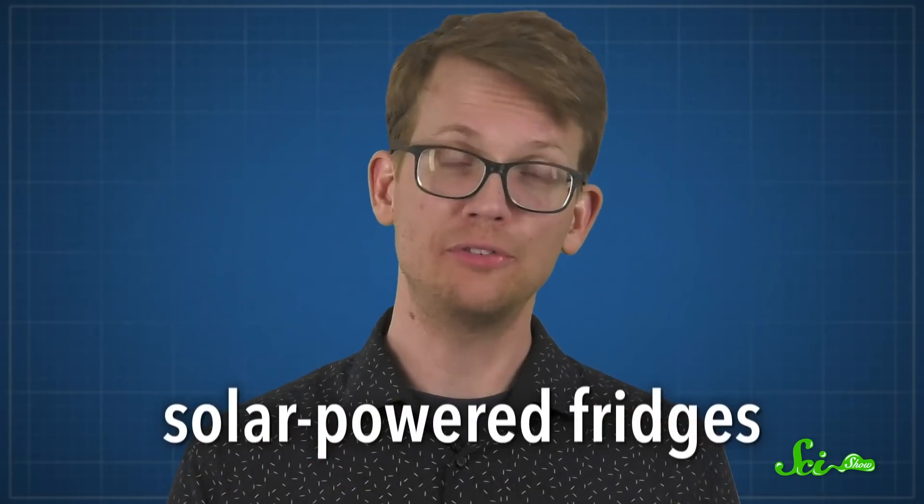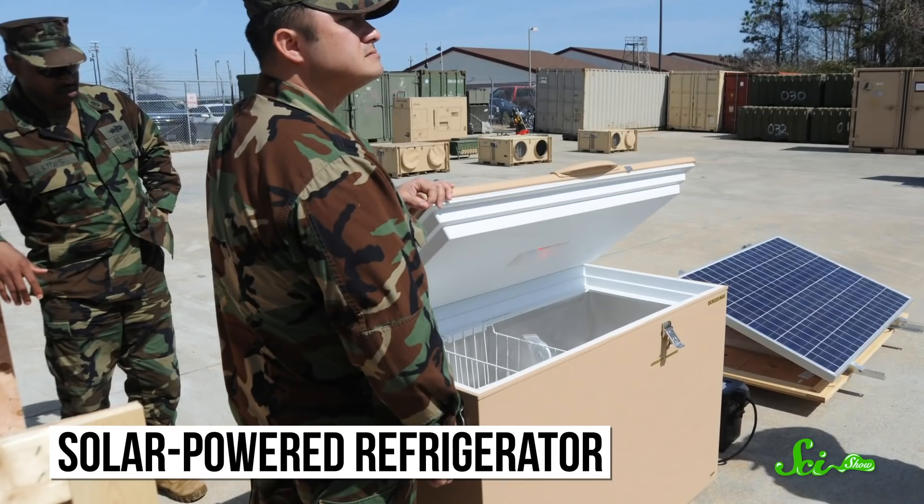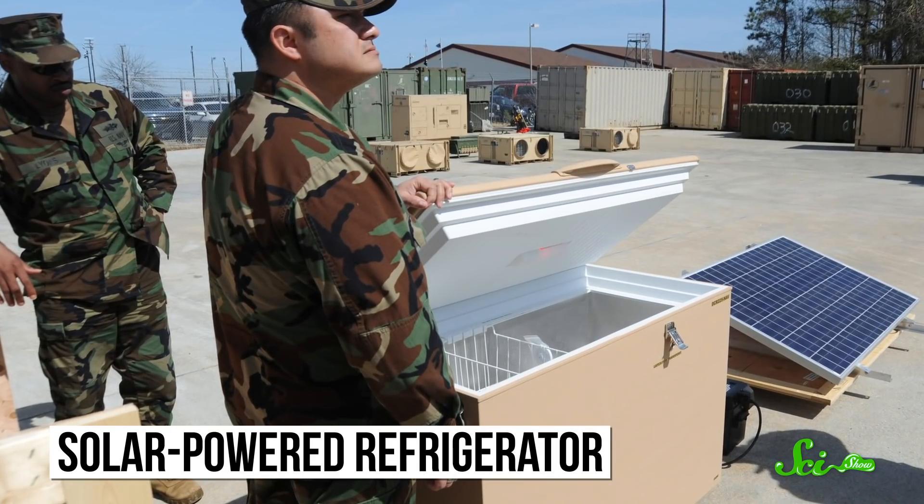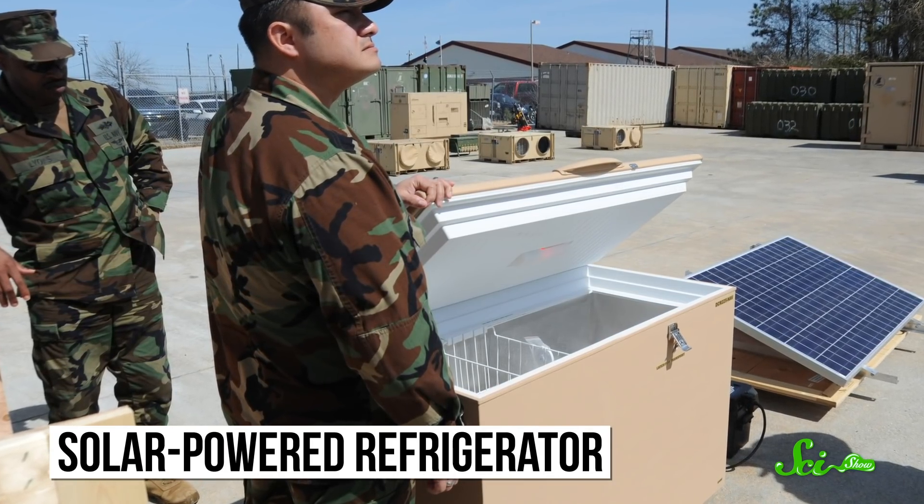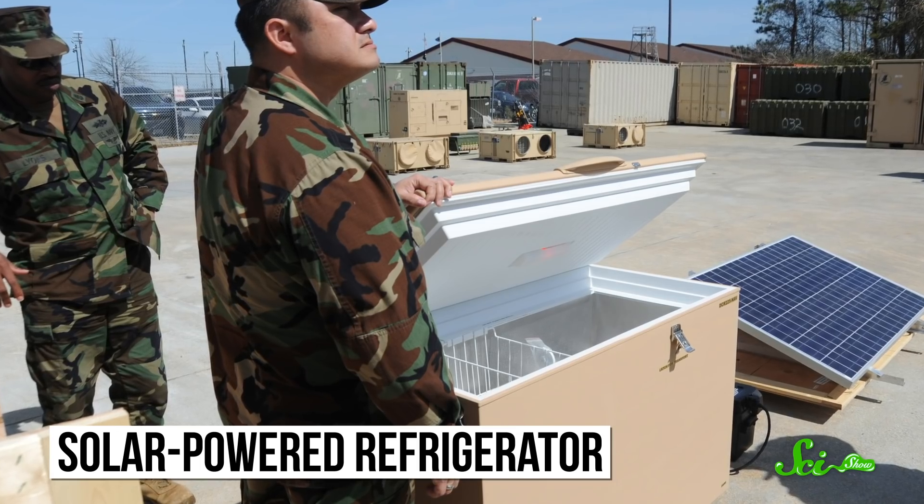Like, for example, solar-powered fridges. These are refrigerators powered by solar panels, and like kerosene fridges, they can come with thermostats and temperature readers. These devices first came onto the scene in the 1980s, but unfortunately,